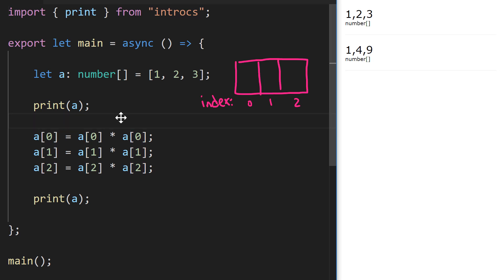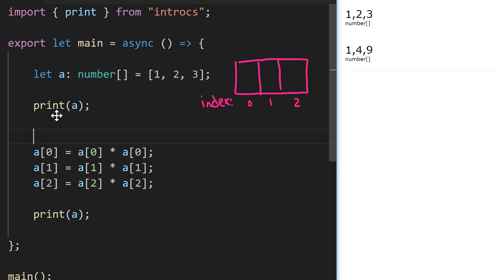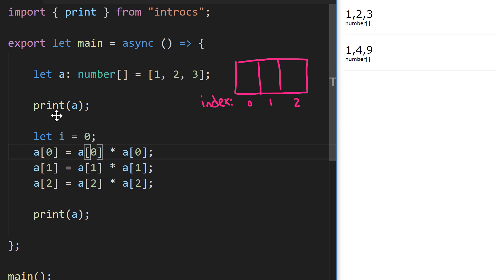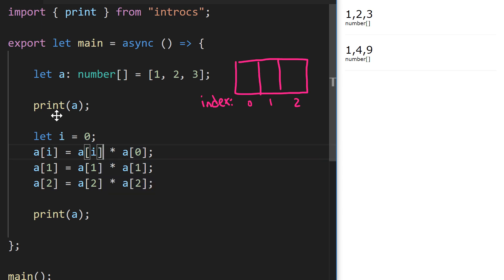Let's try rewriting this program so that rather than hard-coding these numbers in, we're using a counter variable instead. We'll declare a variable named `i` and initialize it to zero, and we're going to say `a[i] = a[i] * a[i]`.